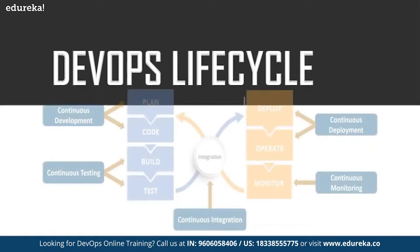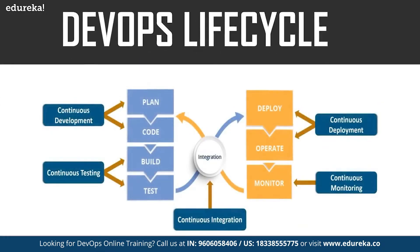As you can see in this diagram, these are the various phases of the DevOps lifecycle: continuous development, continuous testing, continuous integration, continuous deployment, and continuous monitoring. Now let us have a look at each of these phases one by one.